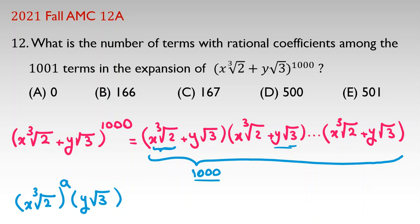So, if we select 1 from first term, we should select 999, the rest. So, if we select from a of these terms x times cube root of 2, so the power of y square root of 3 is 1000 minus a.